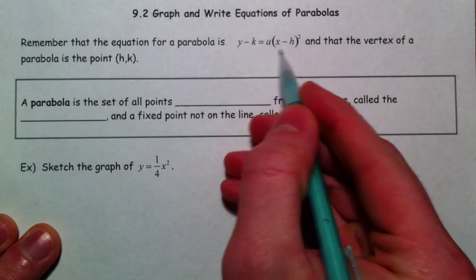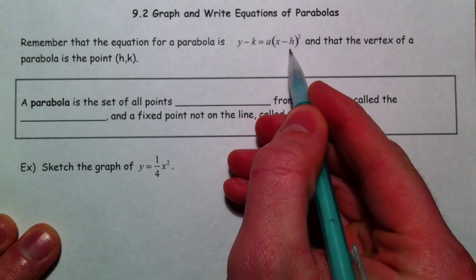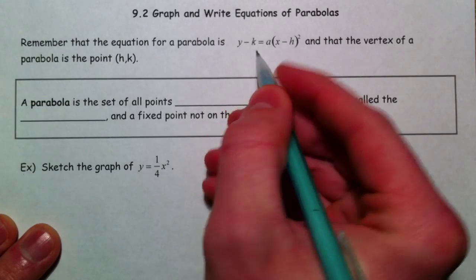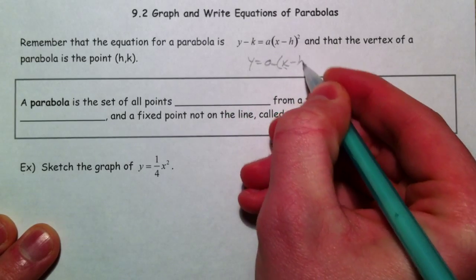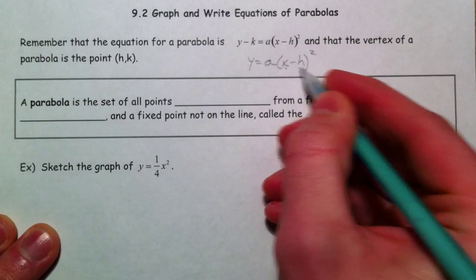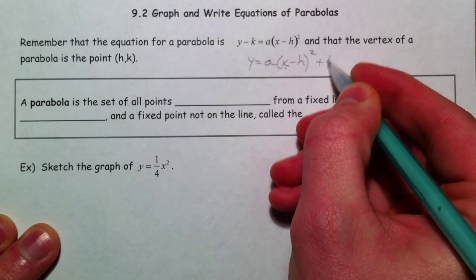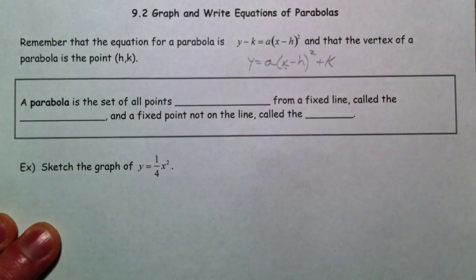We've used an equation like this before where we call it vertex form. Sometimes the minus k was on this side, or sometimes we moved the k over to the other side and it was like this, where it was the opposite for the x and then exactly how we thought about it for the y.